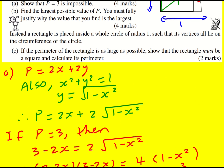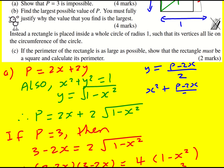Instead of substituting in from the circle constraint, they made y the subject from the perimeter equation. So y equals p minus 2x all divided by 2. If we substitute that into x squared plus y squared equals 1, we get x squared plus the quantity p minus 2x over 2, all squared, equals 1.